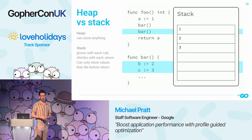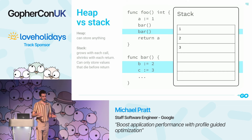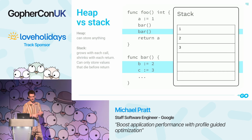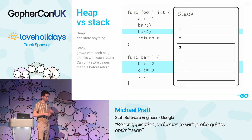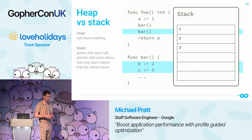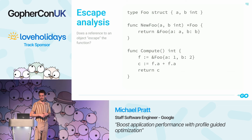If the stack has limitations, why use it at all? Stack management is nearly the fastest possible memory allocator — allocating on the stack is little more than an addition and a subtraction during function entry and exit. Heap allocation, on the other hand, requires looking up free space in more complex data structures during allocation, plus a garbage collector to detect and free unreferenced objects. As a result, it's almost always preferable to allocate objects on the stack if possible.